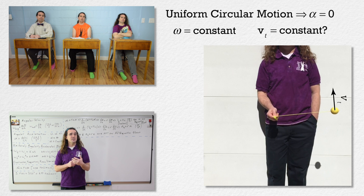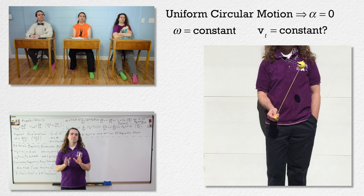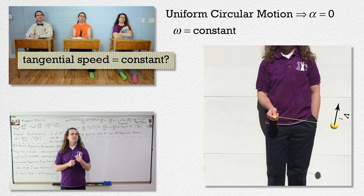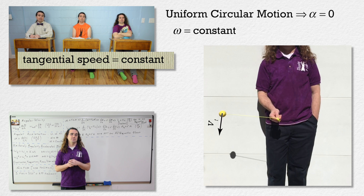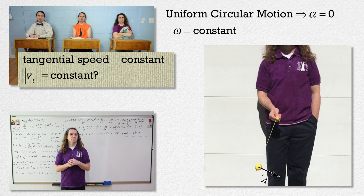Is the tangential speed of the sphere constant? Yes. Is the magnitude of the tangential velocity of the sphere constant? Yes. Is the tangential velocity of the sphere constant? No — the direction of the tangential velocity is changing the whole time, and tangential velocity is a vector. So if the direction of the tangential velocity is changing, then the tangential velocity is changing.